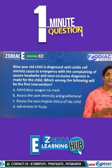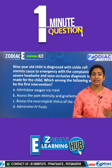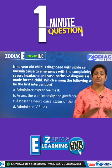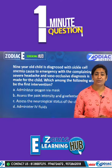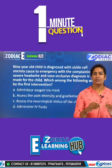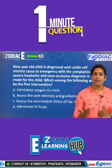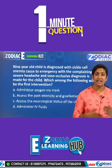The first intervention is to assess the neurological status of the child. Since the child is complaining of severe headache with a vaso-occlusive diagnosis, there may be a chance the patient is having a stroke. Therefore, we must first assess and maintain the neurological status of the child.